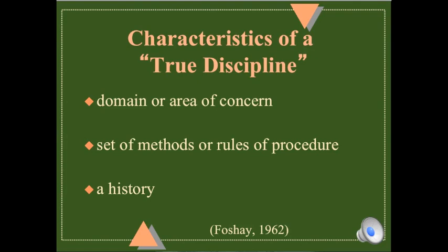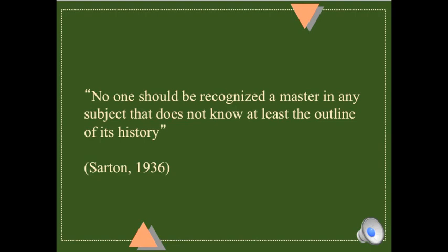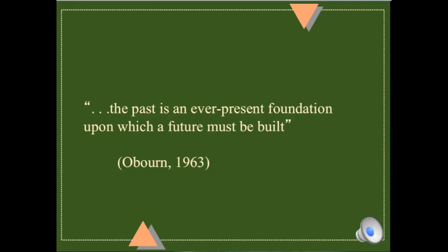The great historian of science was a fellow by the name of George Sarton. George said, no one should be recognized a master in any subject that does not know at least the outline of its history. Ellsworth Obern was a curriculum person. He said, the past is an ever-present foundation upon which a future must be built.